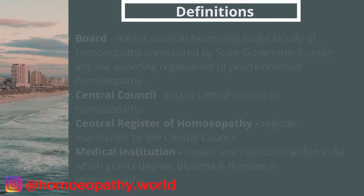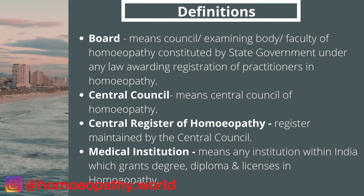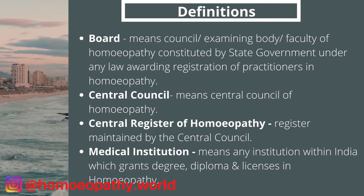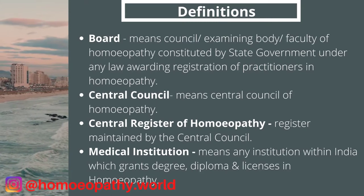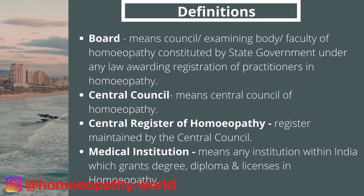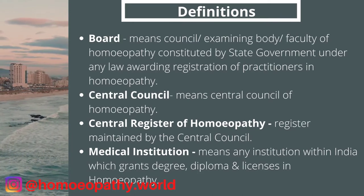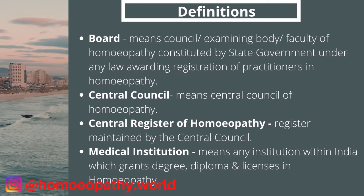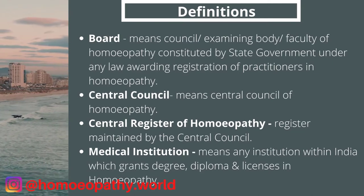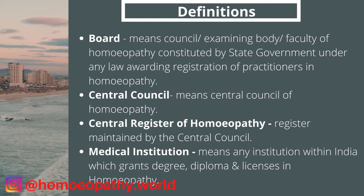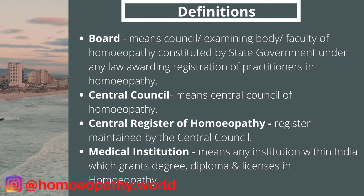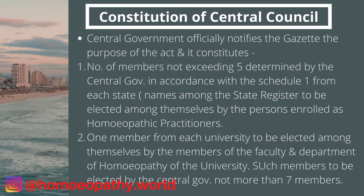Now let's see the definitions in this act. Some important definitions are: Board means a council, examining body, or faculty of homeopathy constituted by the central or state government under any law awarding registration of practitioners in homeopathy. Central Council means the Central Council of Homeopathy. Central Register of Homeopathy is the register maintained by the central council. Medical institution means any institution within India which grants a degree, diploma, or license in homeopathy.